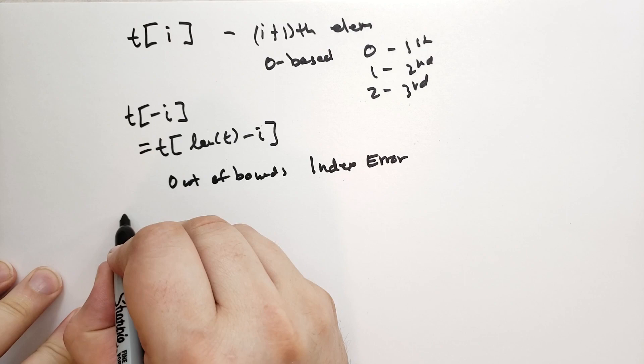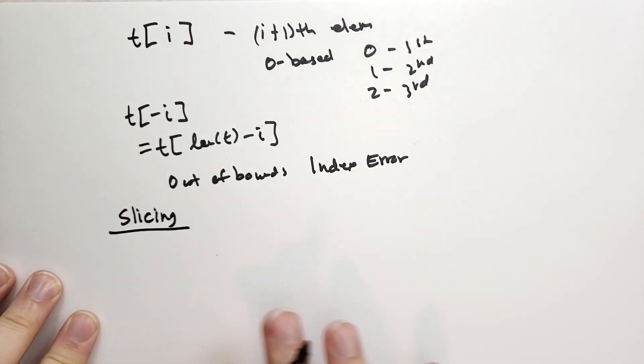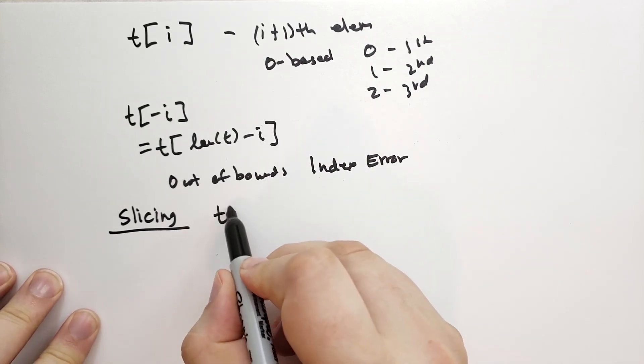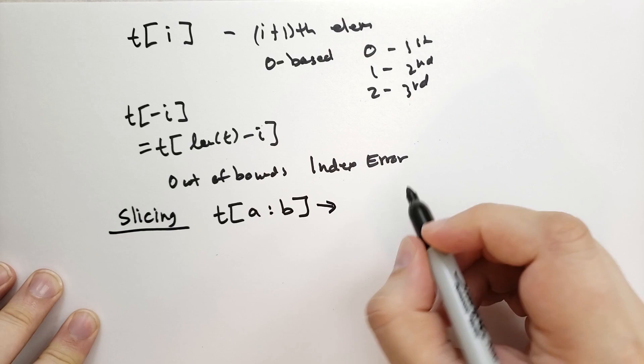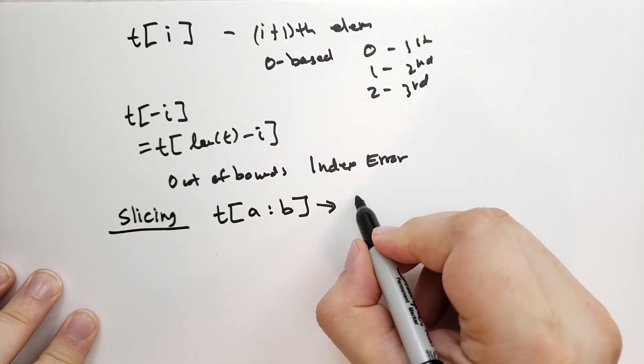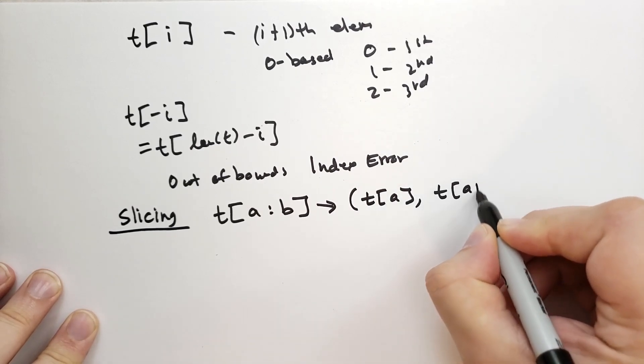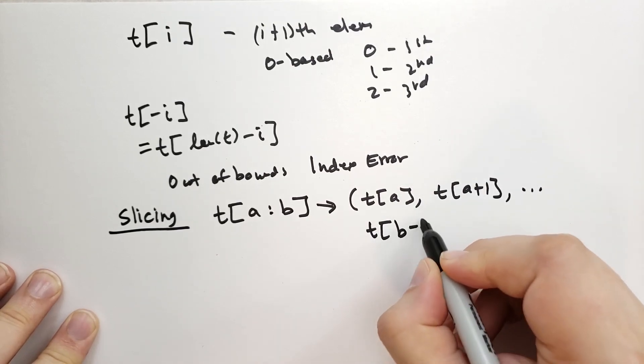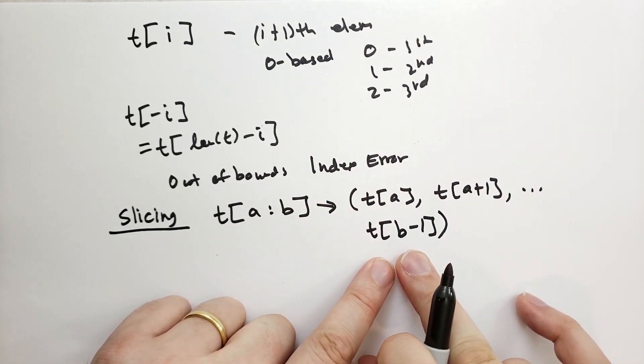We can also do something called slicing. So I'm going to talk about slicing now. And this works for strings, it works for tuples, it works for bytes. What slicing does is you start with your sequence, and then you have a start, and you have an end. I'm going to use a and b. And what this will do is it returns a tuple, or if it's a string, a string, or if it's bytes, bytes, which is basically, it's going to start with a, and then it's going to give you a plus one, and so on, until the element before b. So it's not going to include the b-th element. It's going to include everything up to b.